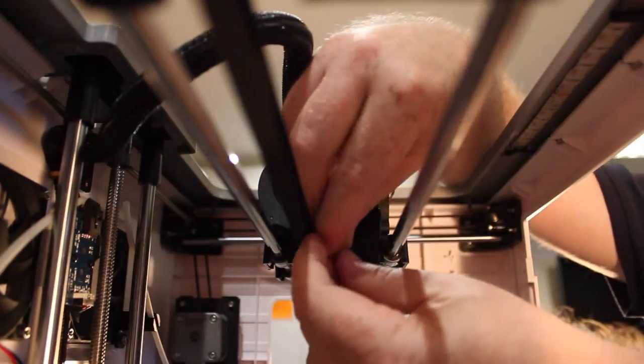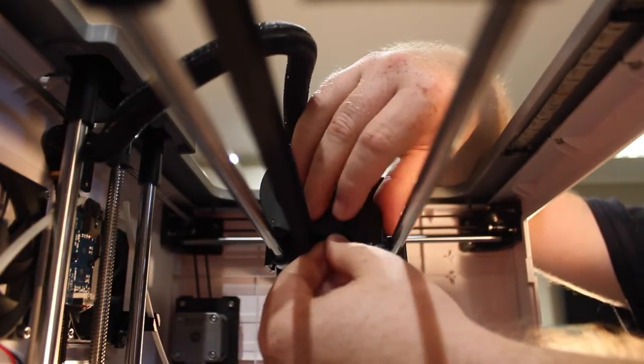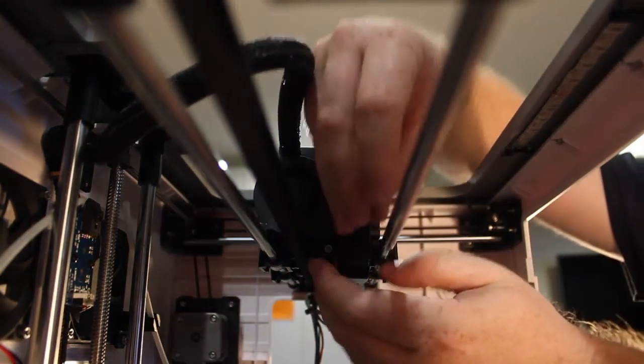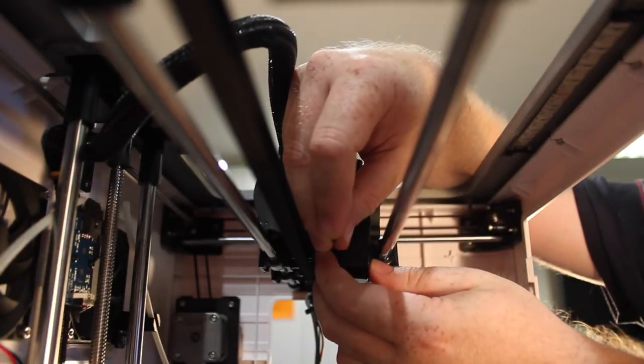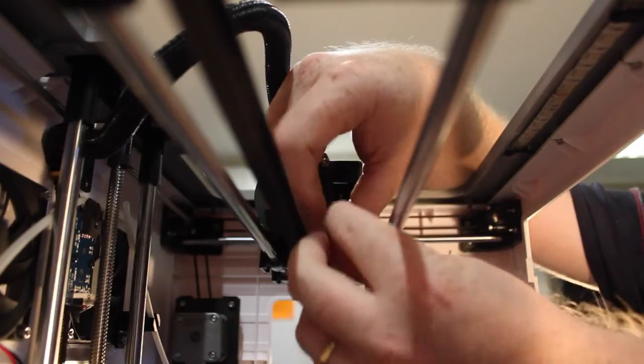Now we need to be able to put that screw in without dropping it all over the place. Once that's in the right place it should sit there, we can get our Allen key and we can tighten that up.